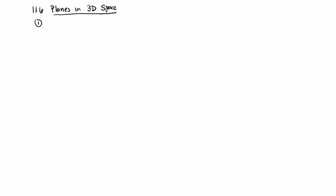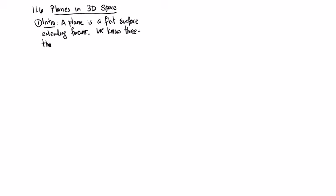This is 11.6 — planes in 3D space. To begin, let's make sure it's clear exactly what a plane is. A plane is a flat surface extending forever in all directions — or really, extending forever, since it doesn't extend up and down. We already know three planes: the xy-plane, the xz-plane, and the yz-plane.